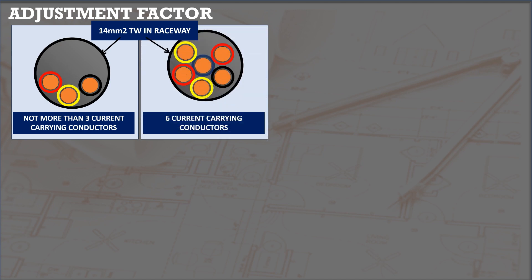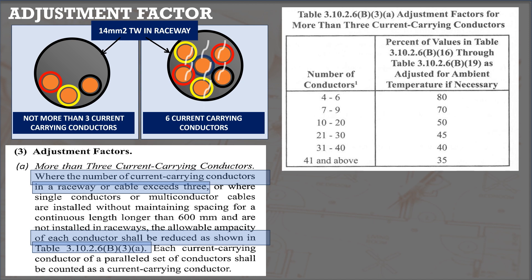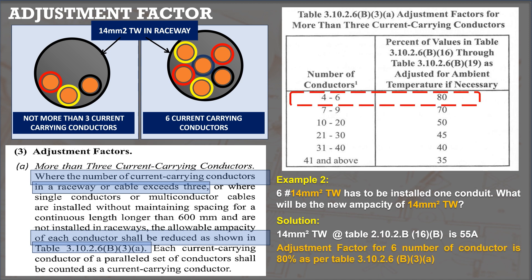What if 14 squared millimeters TW is installed in one conduit with six current-carrying conductors? In bullet 3 of Section 3.10.2.6 B.2, where the number of current-carrying conductors in a raceway or cable exceeds three, or single conductors are installed without maintaining spacing for a continuous length longer than 600 millimeters and not in raceways, the allowable ampacity of each conductor shall be reduced as shown in Table 3.10.2.6 B.3a. Cable grouping affects the correction factor due to thermal effects. For six conductors, the adjustment factor is 80%, so 55 × 80% = 44 amperes.